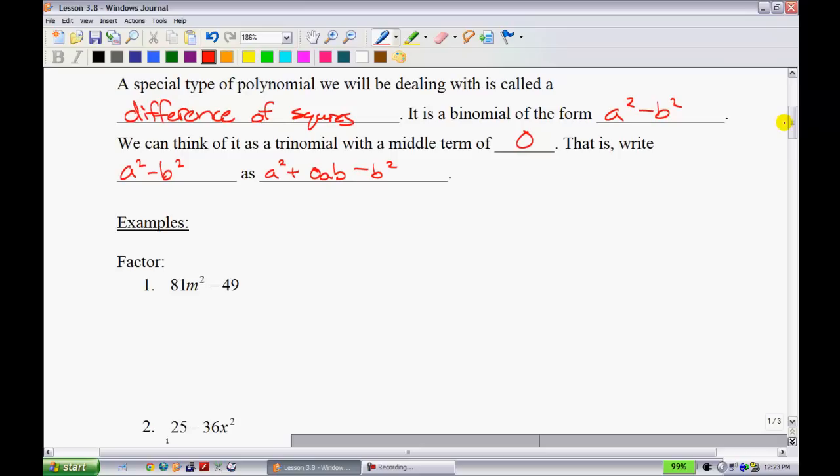For a difference of squares, if you have a²-b², to factor it fully, you start with two brackets. You take the square root of a², which is a. You take the square root of the next term, which is b, and you make one of them positive and one of them negative, and then it has been fully factored.